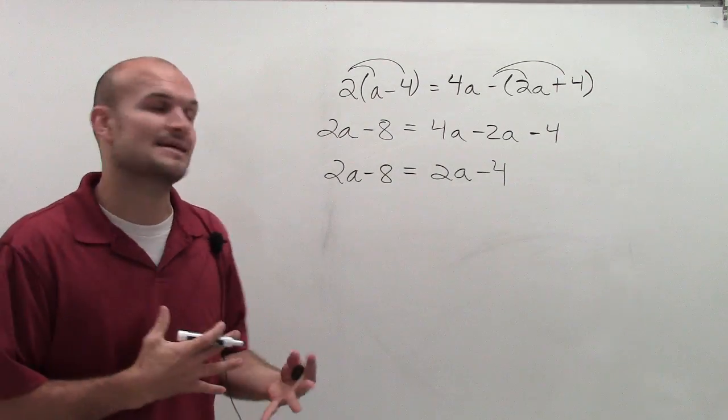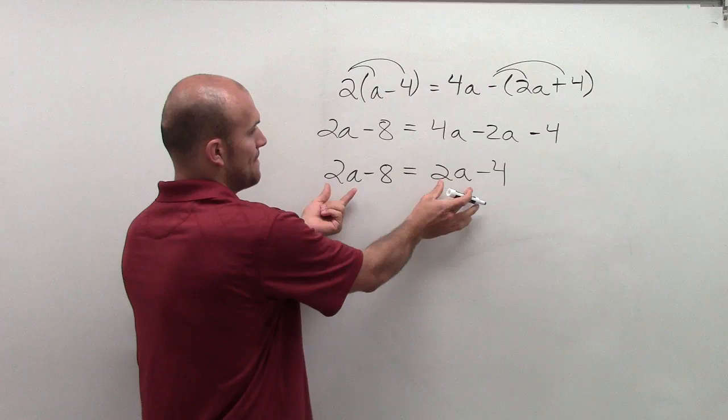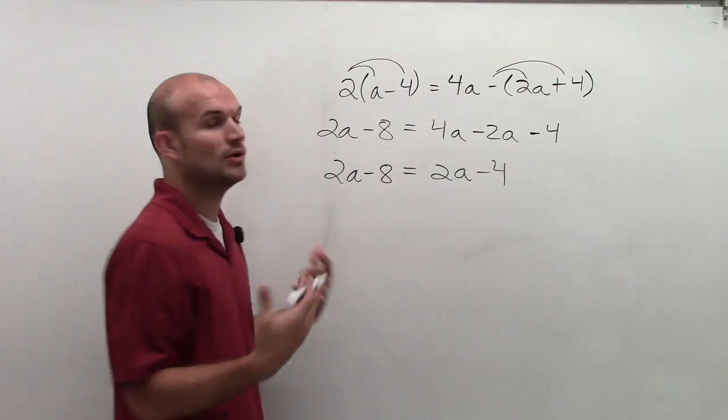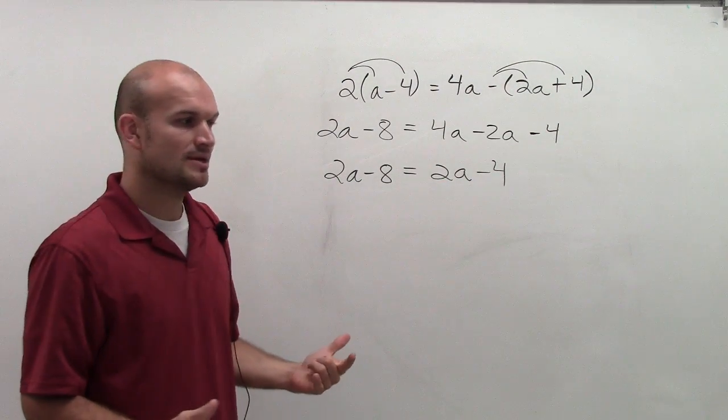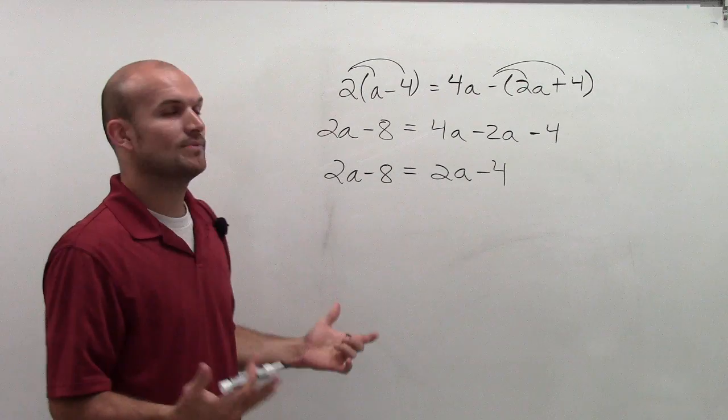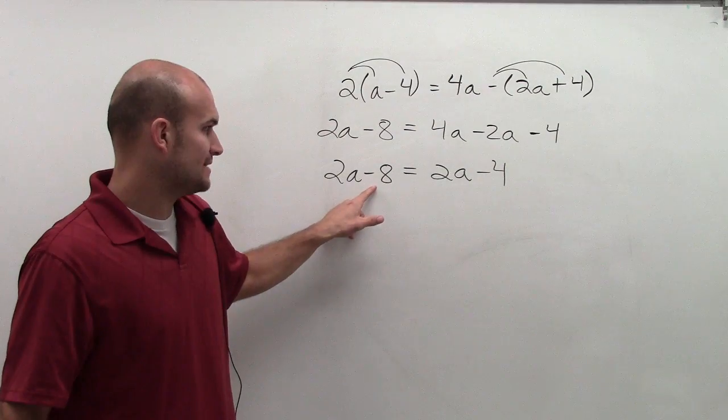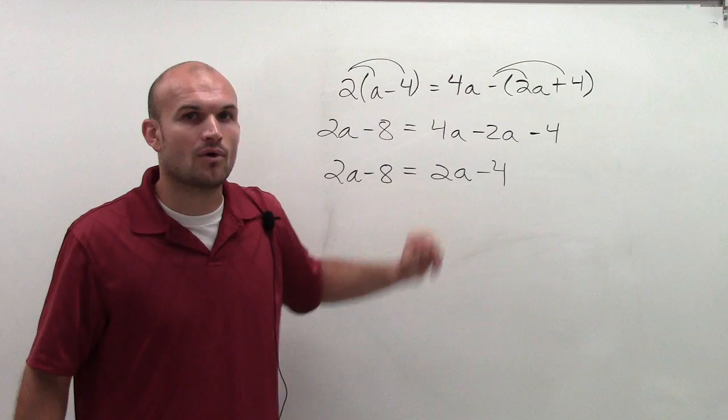Remember, I always got to get my a on the same side, but what I notice is I'm multiplying my a by 2 on both sides of the equation. So after multiplying it by 2, I'm subtracting 8 on the left side and I'm subtracting 4 on the right side.